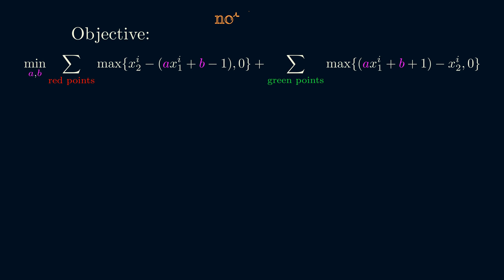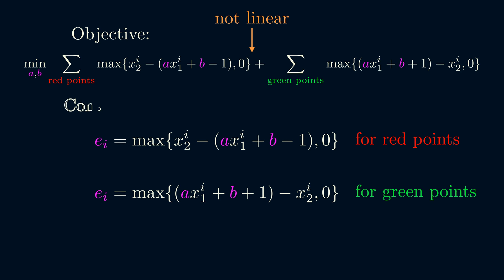We can now write the objective as minimizing the sum of these penalties. Now, our objective is not linear in the variables a and b, but as usual, there's a trick we can use.